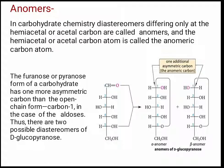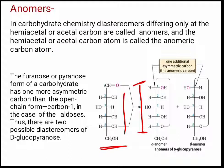The furanose or pyranose form of a carbohydrate has one more asymmetric carbon than the open chain form. In the open chain form there were only four asymmetric carbons — C2, C3, C4, and C5 — but in the ring structure, carbon one is also an asymmetric carbon, giving five asymmetric carbons. Thus there are two possible diastereomers of D-glucopyranose: if the OH is on the right side you get one anomer, and if it is on the left side you get the other anomer.